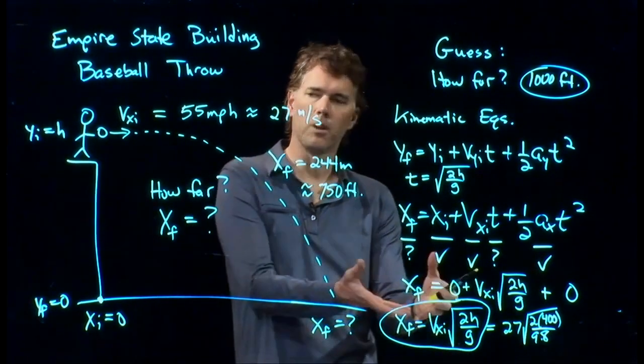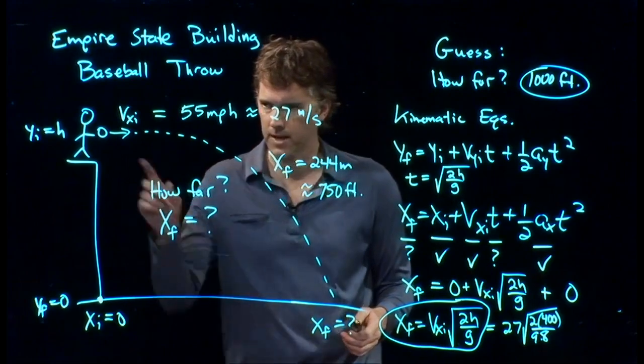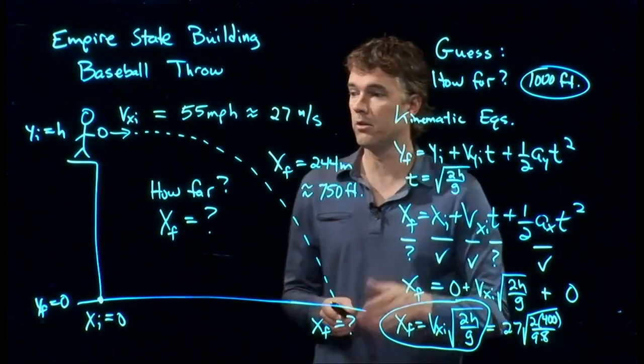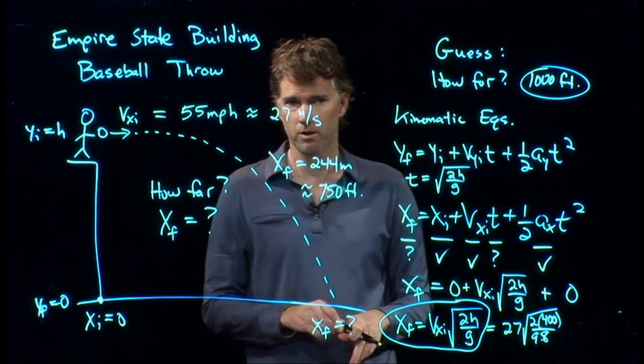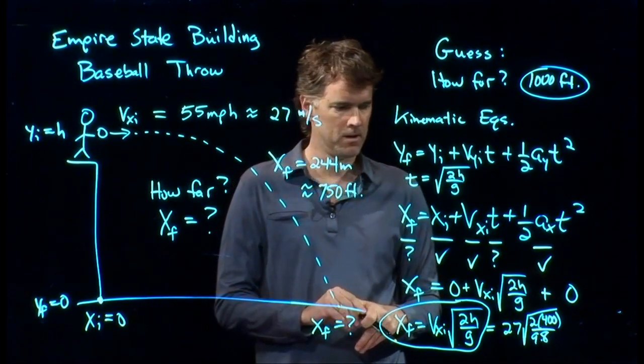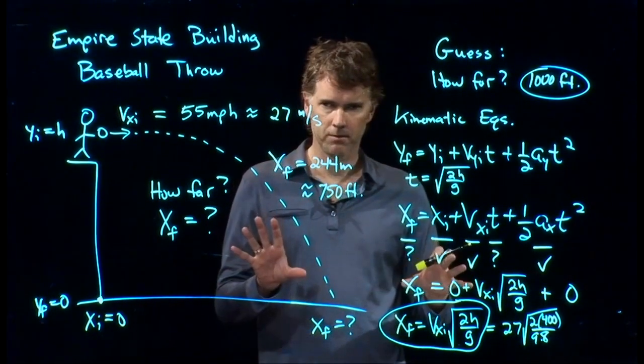So if G is smaller, it's in the denominator, this whole number gets bigger. Exactly right. X final will be much bigger. You could throw that baseball a lot further on the Moon than you could on the Earth. Okay? All right. Any more questions about this approach?